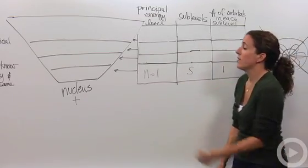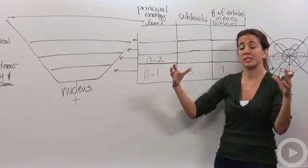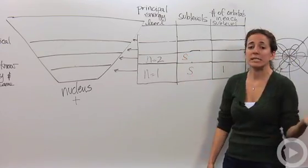In the n equals 2 principle energy level, there is an S also, a little bit bigger sphere, and there is also P orbitals.